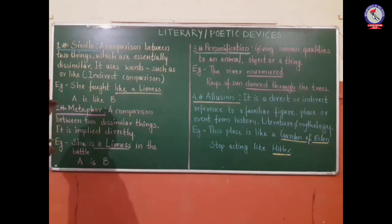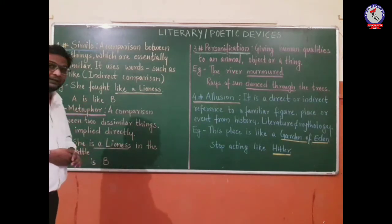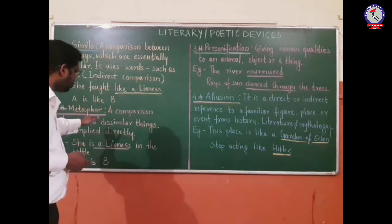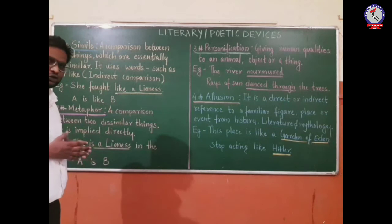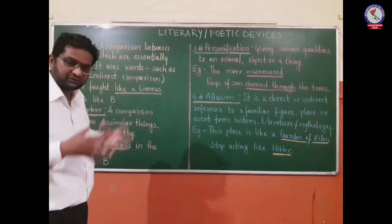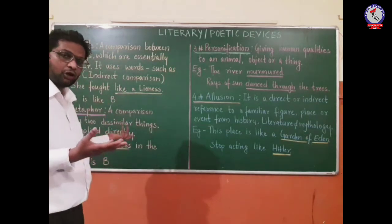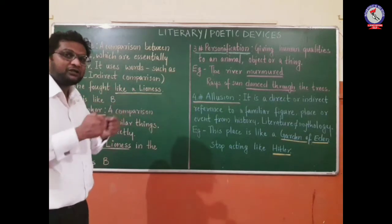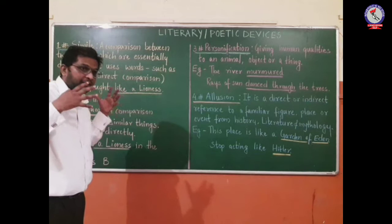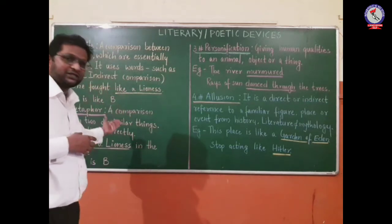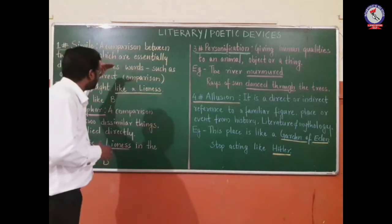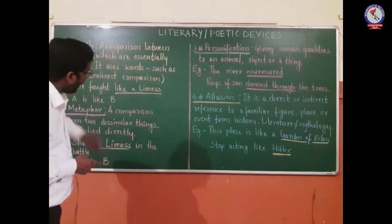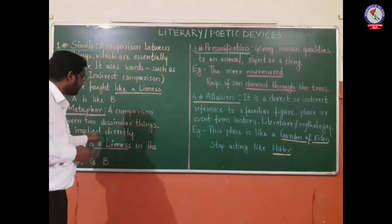The second poetic device is metaphor. A metaphor also makes a comparison between two dissimilar things. However, the important point to note is how the comparison is made. In simile, the comparison is indirect, while in metaphor the comparison is implied directly.